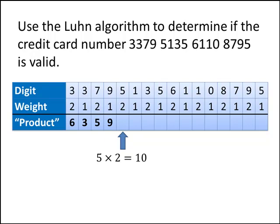Nine times one is nine. Five times two is ten. Ten is a two-digit number. So we take one plus zero, add those together, we get one. So that's what we record for our next product. And we continue in this way, filling in all of the results.